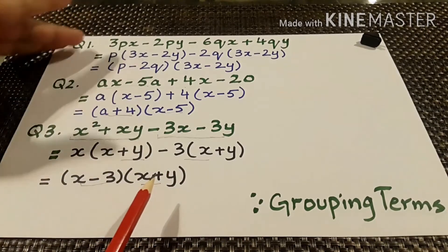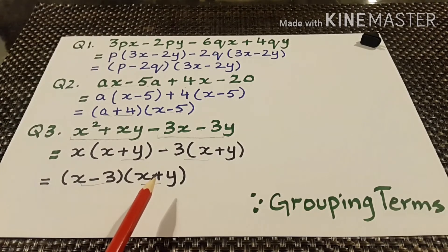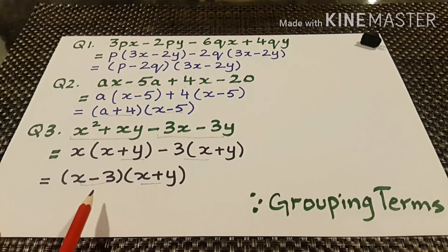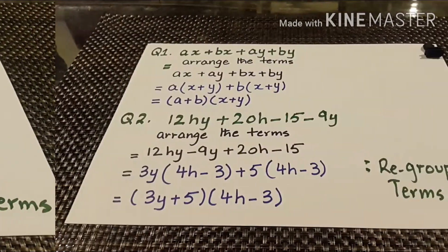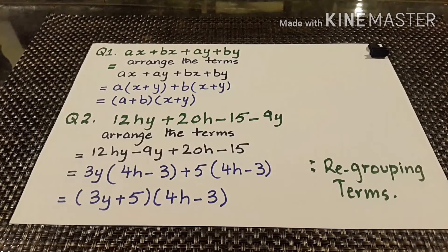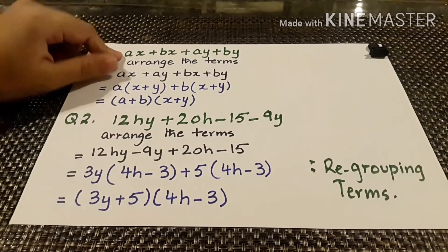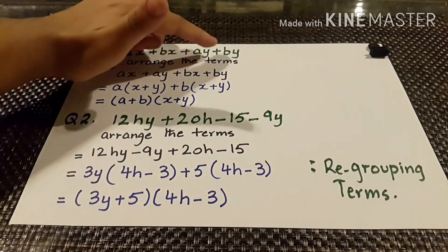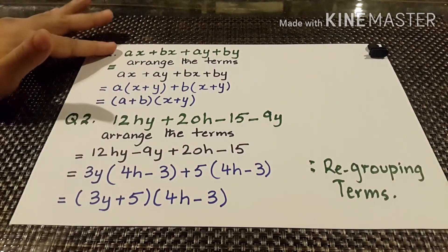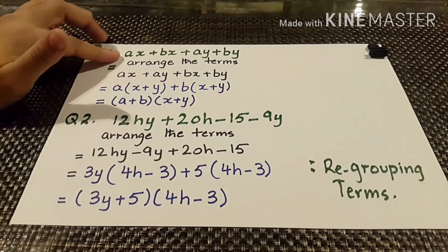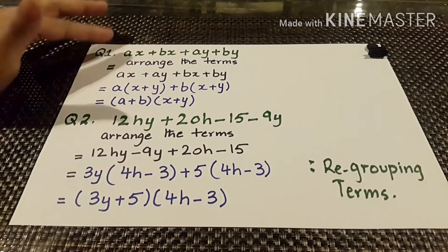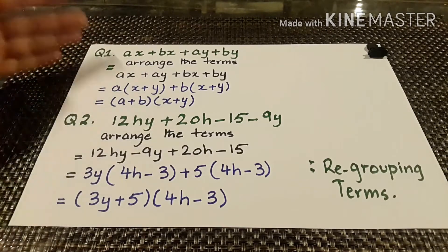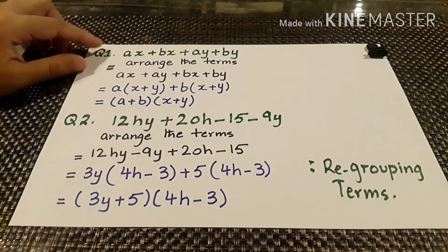In this way we have solved these questions in order to do the factorization, and the method used is known as grouping the terms of the algebraic expressions. Hope you have understood. Our second way to factorize the algebraic expression is by regrouping the terms. If we cannot find the common factors in the original pattern, we can arrange or regroup the terms. Now let's do the question.